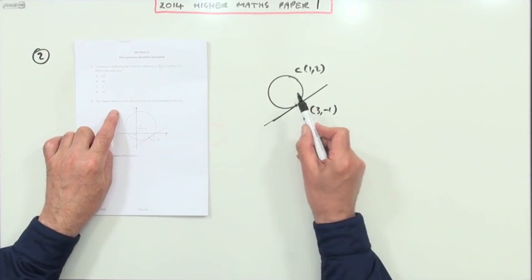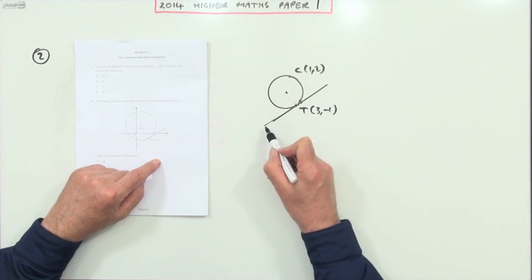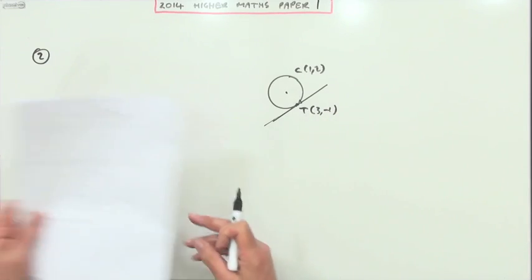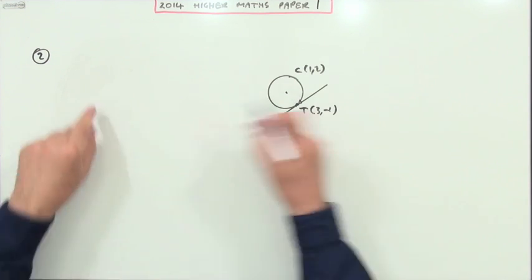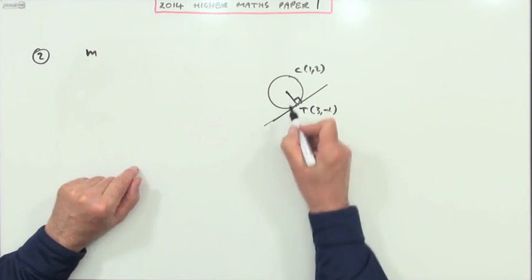Number 2: the diagram shows a circle with center (1, 2) and a tangent meeting at the point T(3, -1). What's the gradient of this tangent? Well, the radius meets the tangent at right angles, so get the gradient of the radius.